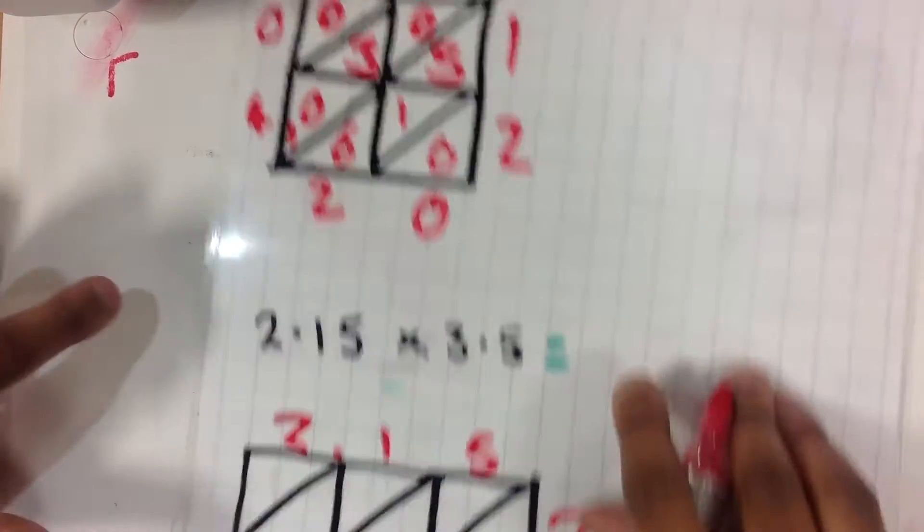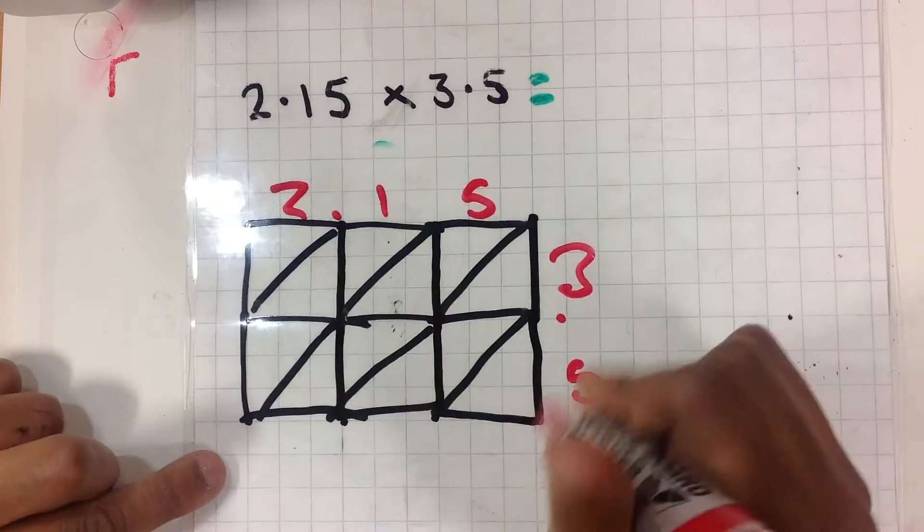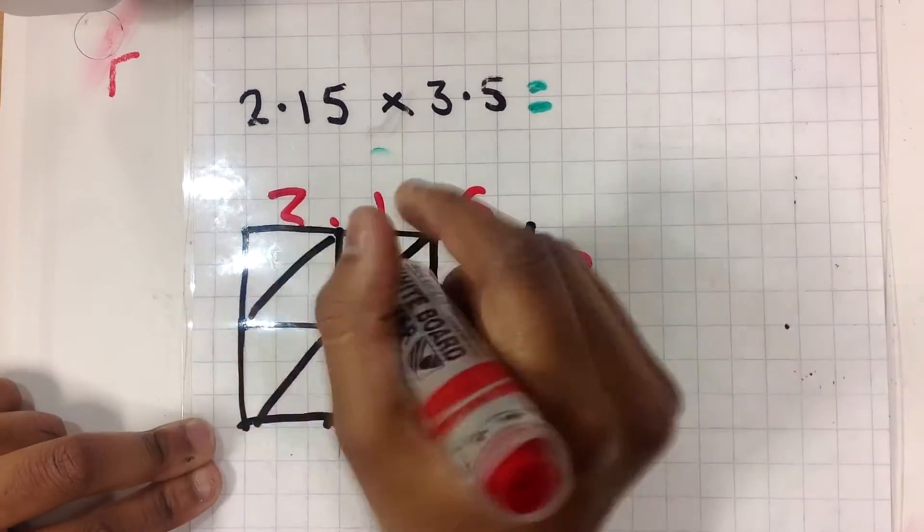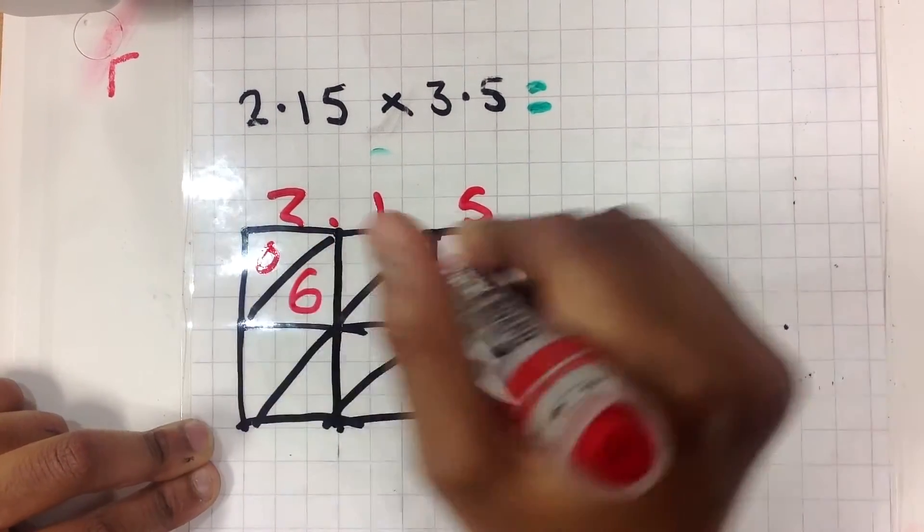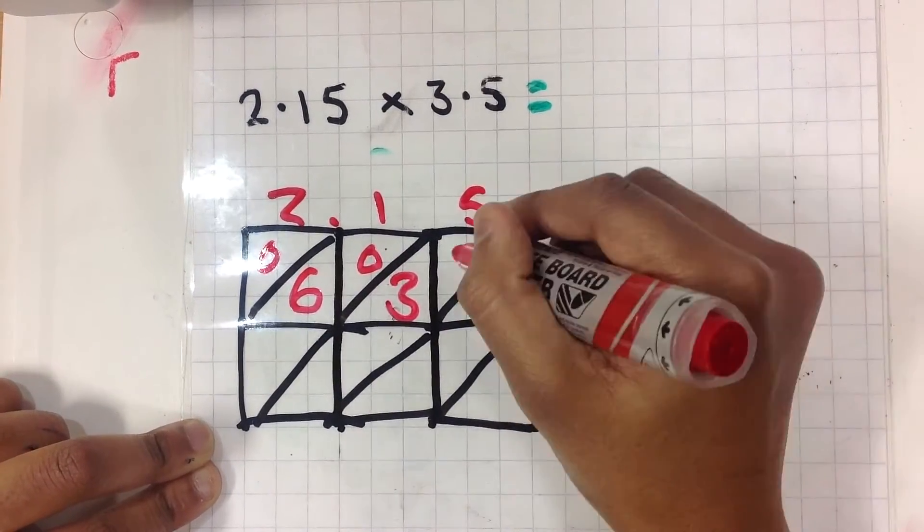The next question. You do the exact same thing. And then you do 3 times 2 equals 6. 3 times 1 equals 3. 3 times 5 equals 15.